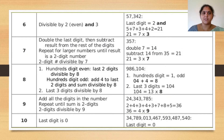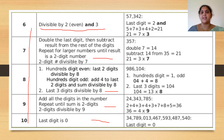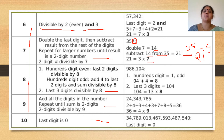For divisibility rules of 6, 7, 8, 9, and 10, the tests are written clearly in the box — read it for a clear understanding. For 6, it must be divisible by both 2 and 3. For 7, double the last digit and subtract from the rest — for example, with 357, double 7 is 14, and 35 minus 14 is 21, which is a multiple of 7, so 357 is divisible by 7.